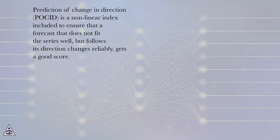Prediction of Change in Direction, POCID, is a nonlinear index included to ensure that a forecast that does not fit the series well but follows its direction changes reliably gets a good score.